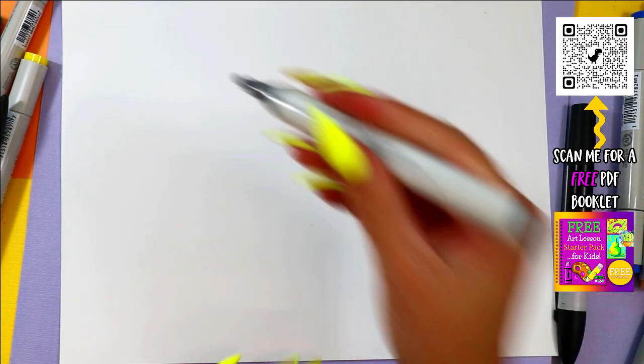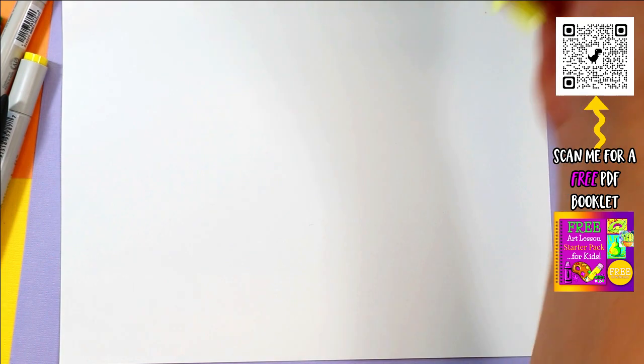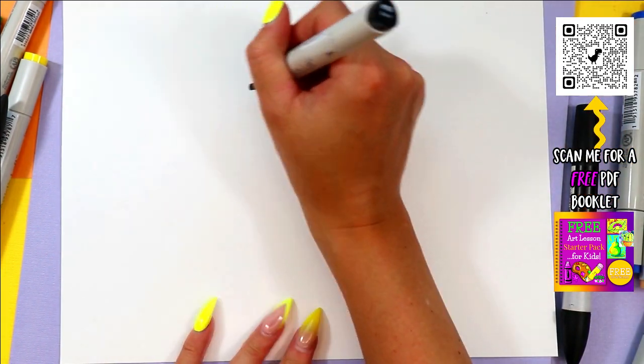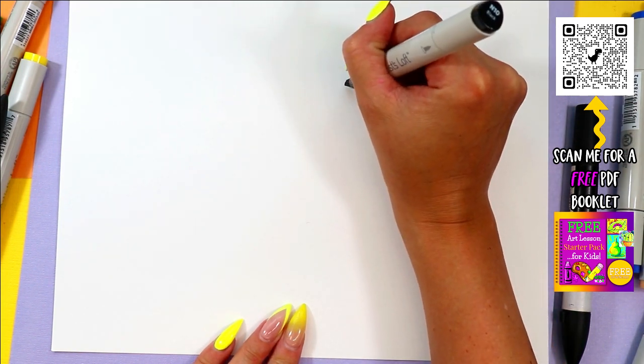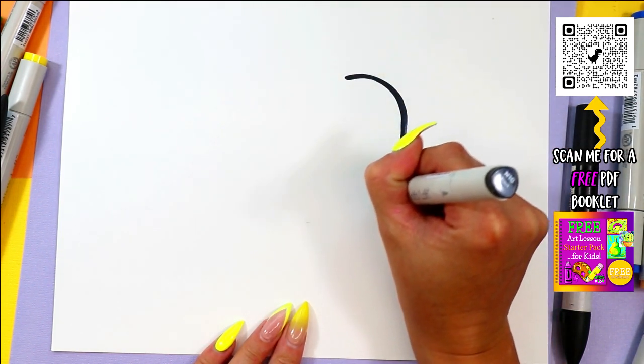All right, so we're going to be drawing a super cute flamingo. Here we go. We're going to begin with our beak. We're going to curve it around and down.